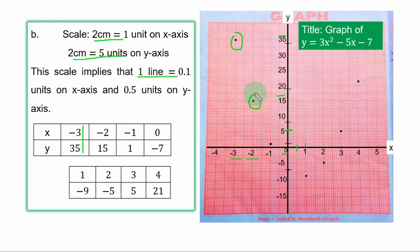The next point, minus 1 for s, then 1 for y. I just explained that on the y axis, 1 line is 0.5 and 2 lines is 1. So from the point 0 here, the origin, you count 2 lines up. That is 1 against minus 1 for s. When s is 0, y is minus 7. That is what you have here. If you count 4 lines from minus 5, you have minus 7.